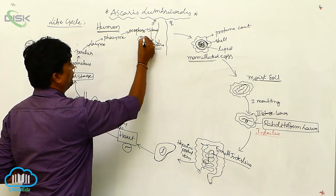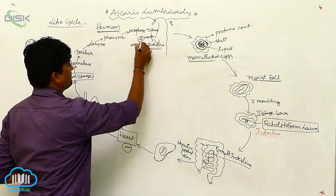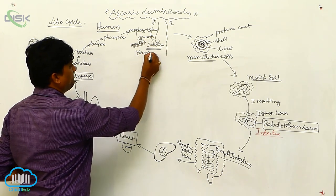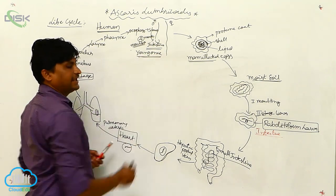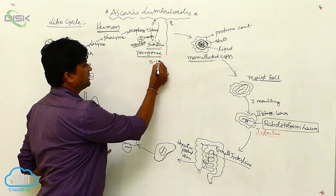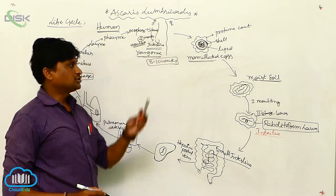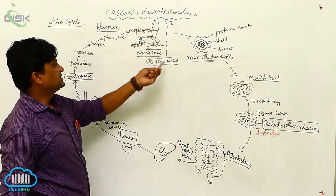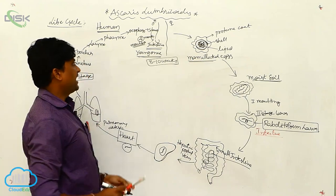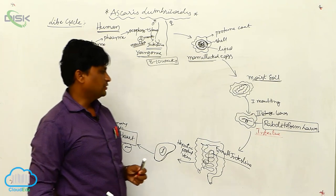From the esophagus, the larva passes through the stomach and finally reaches the intestine again. Here, the fourth molting takes place, and the young one is formed. Within eight to ten weeks, it becomes reproductively active, and the adult Ascaris completes the life cycle.